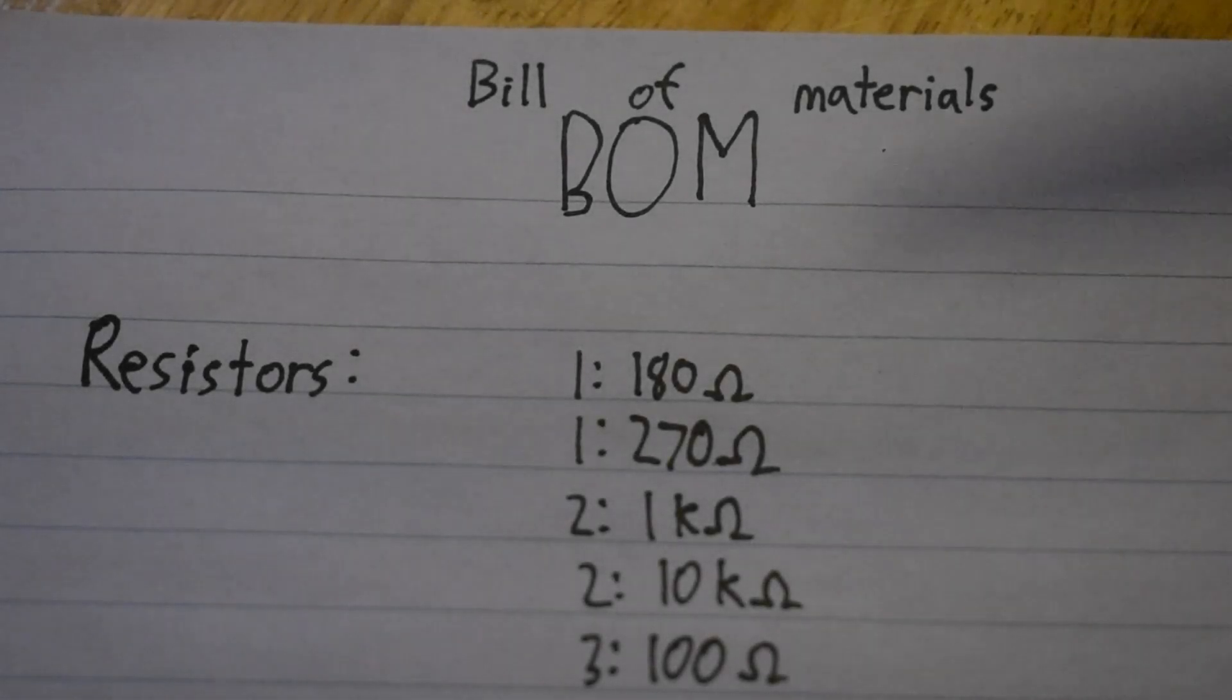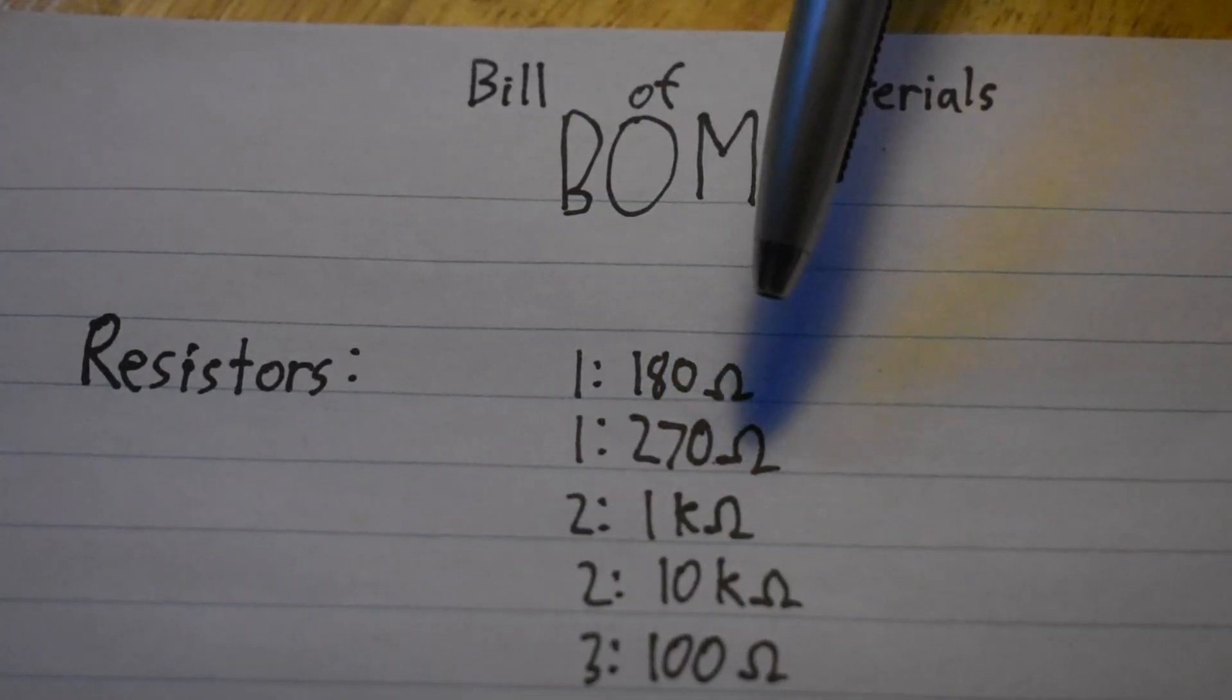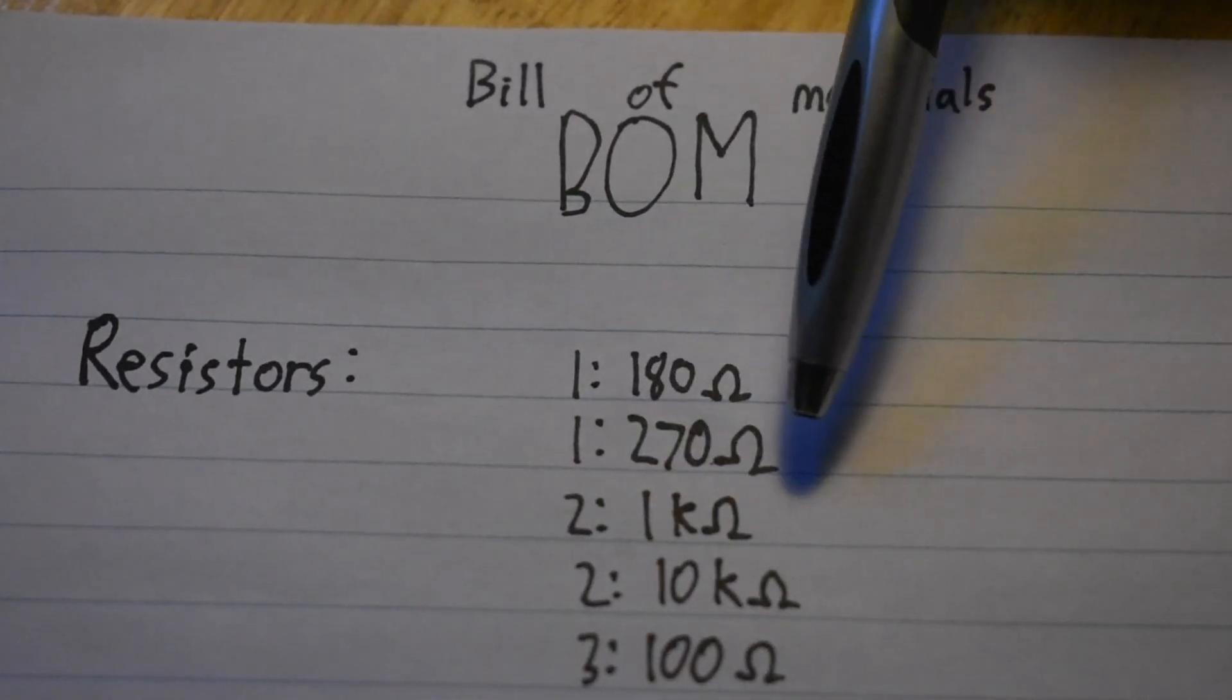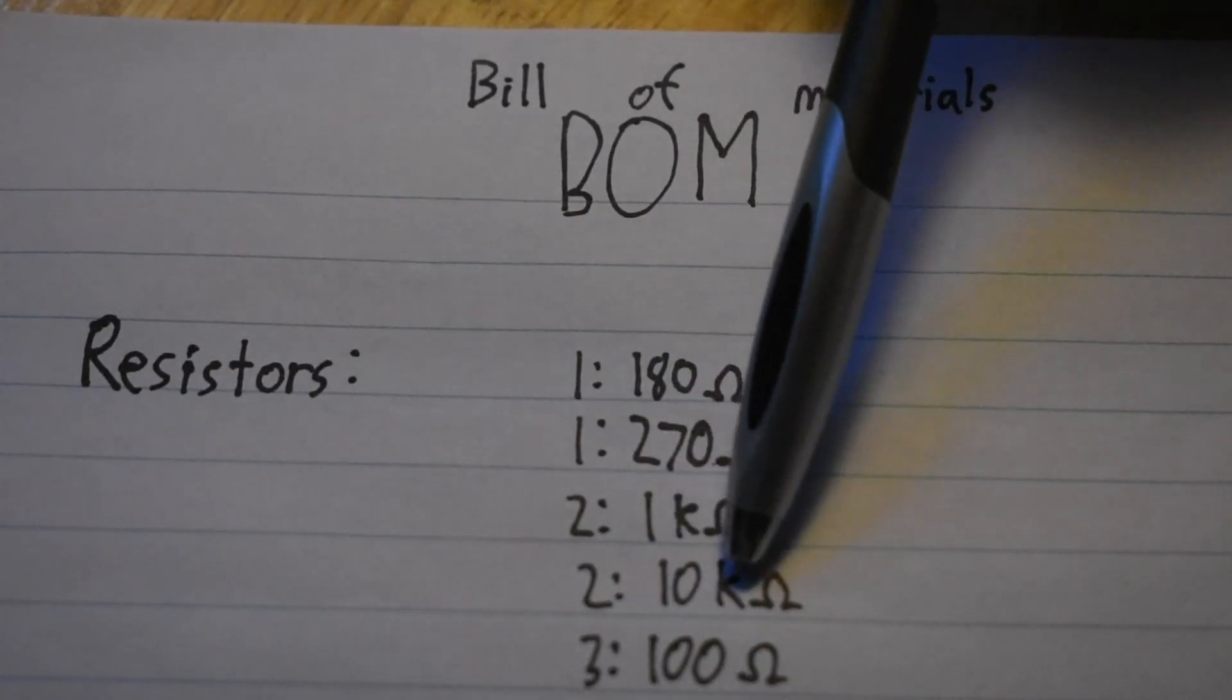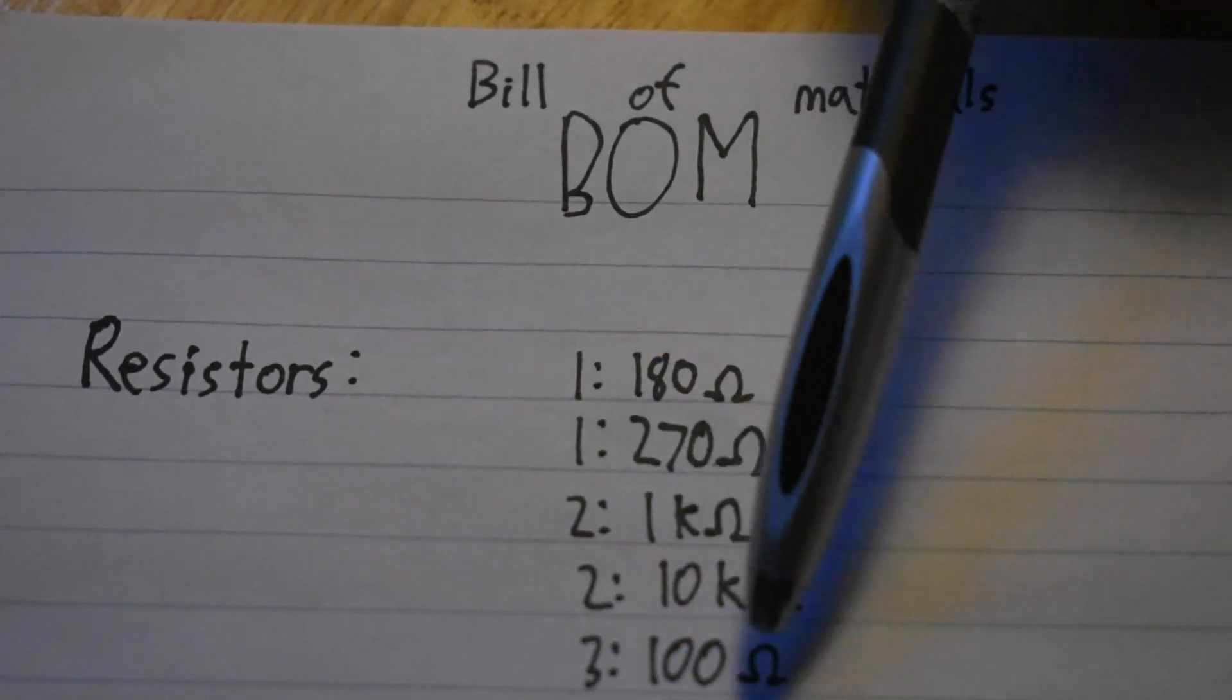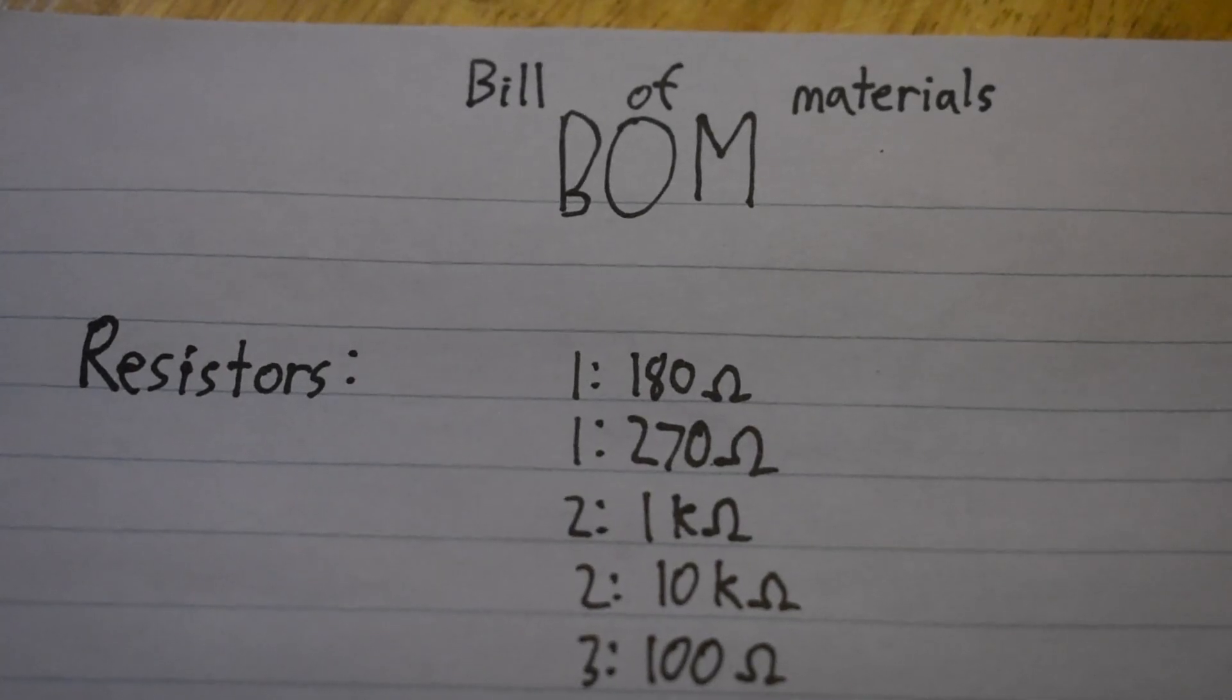To build this circuit, you will need the following bill of materials. You will need one 180 ohm resistor, one 270 ohm resistor, two 1k resistors, two 10k resistors, three 100 ohm resistors, and four 2.2k resistors.